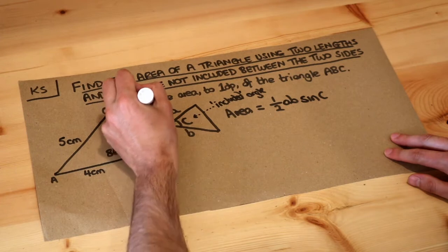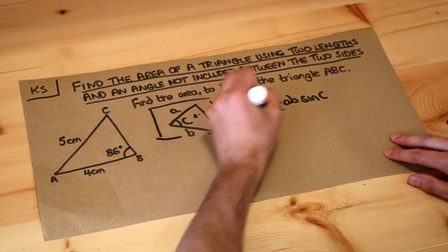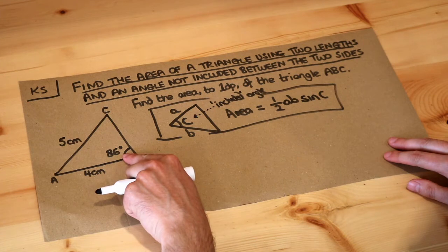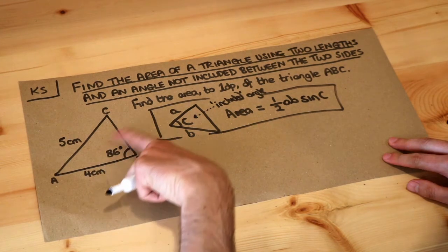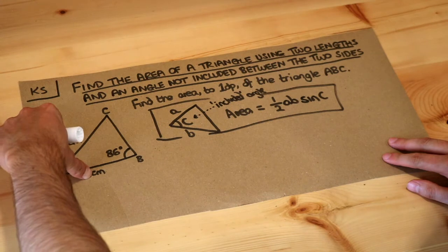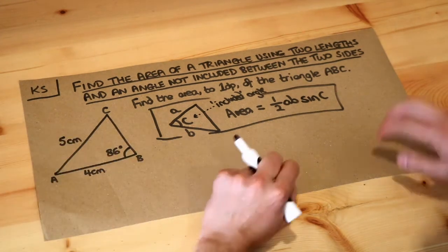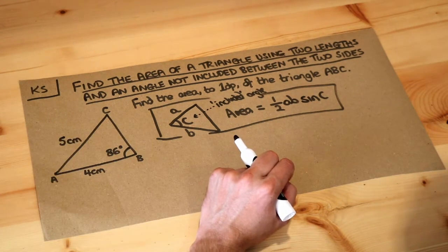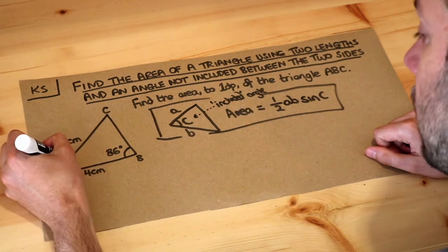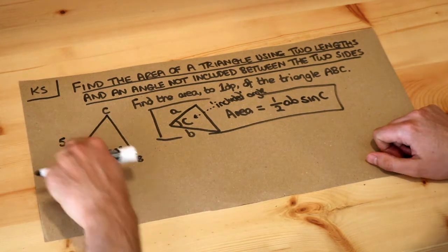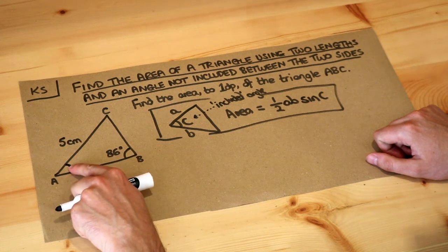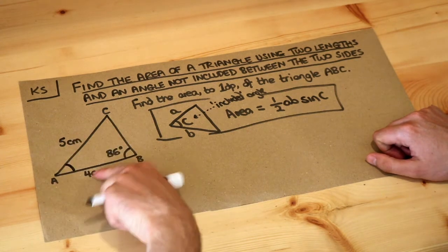So that was our formula from before. Now the problem is that this angle here is not between the two sides of interest. Actually these are the two sides we're given and we don't have the angle between them. There are different ways we can do this, but I think the easiest way is to try and find what is this angle between the two sides, so that would then be the included angle of these two sides.